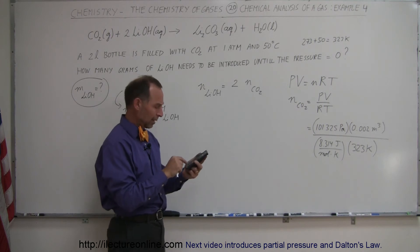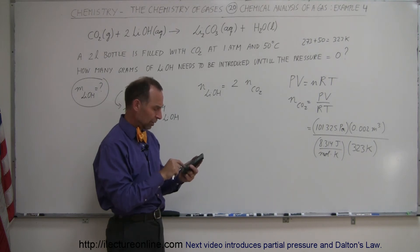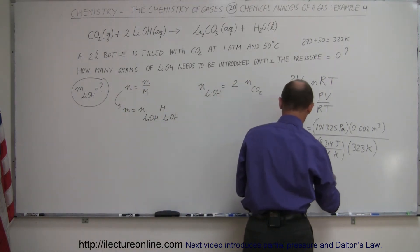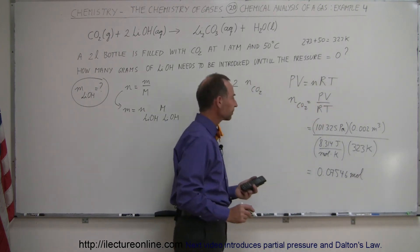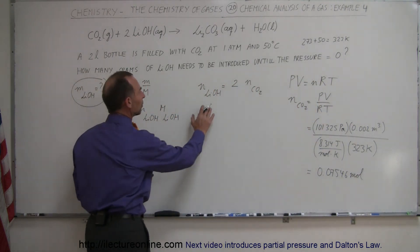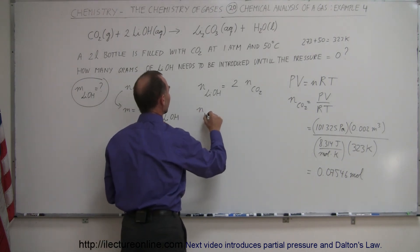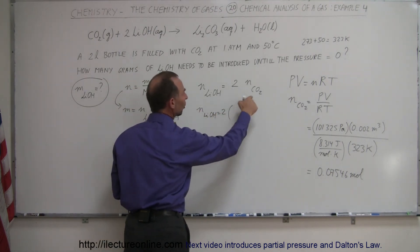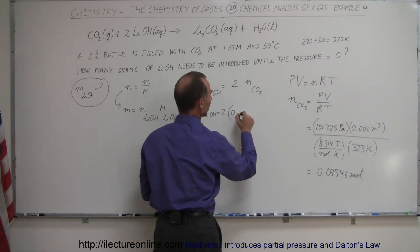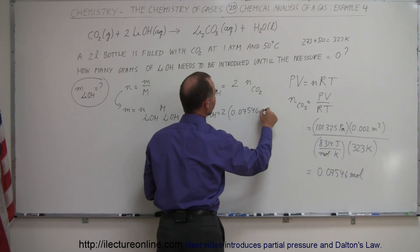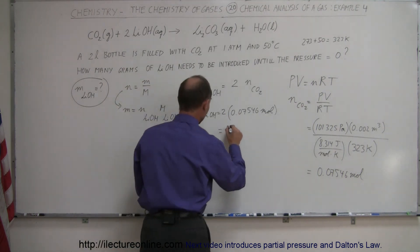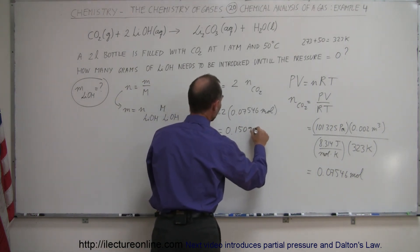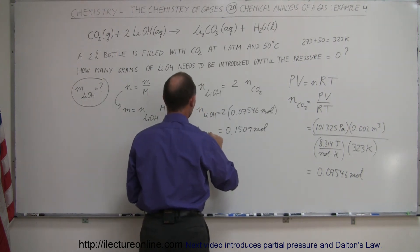101,325 times 0.002, divided by 8.314, divided by 323 equals 0.07546 moles of carbon dioxide. From that, we calculate the number of moles of lithium hydroxide: it equals 2 times 0.07546, giving us 0.1509 moles of lithium hydroxide.